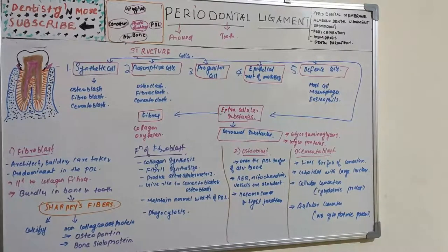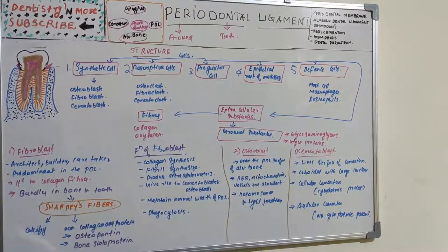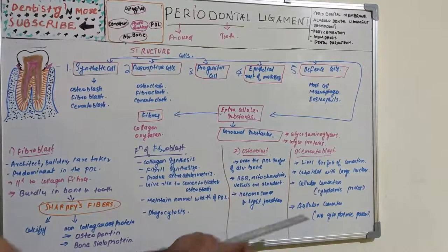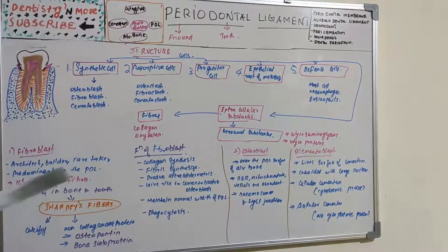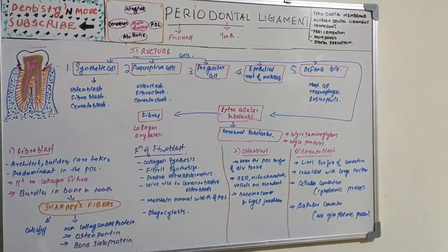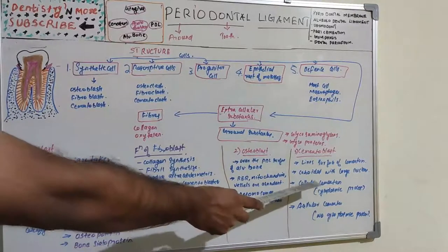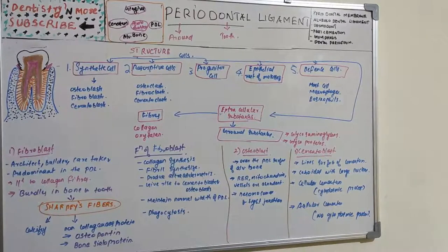Cementoblast lines the surface of cementum. They are cuboidal with a large vesicular nucleus with one or more nucleoli, and all the organelles required for protein synthesis and secretion are present. There are two types: cells with cytoplasmic processes and cells without. Cells actively depositing cellular cementum exhibit cytoplasmic processes and basophilic cytoplasm, whereas cells producing acellular cementum do not have prominent cytoplasmic processes.